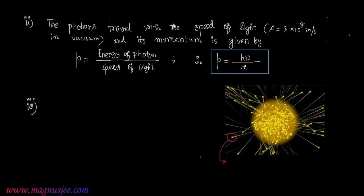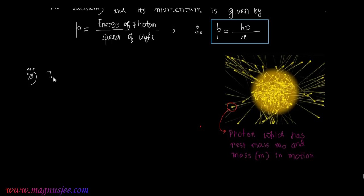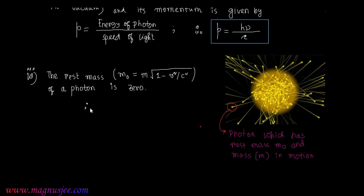Property 4: This is the photon in the diagram — these packets of energy are the photons. A photon has rest mass M₀ and mass M in motion. The rest mass is given by M₀ = M√(1 − v²/c²), where v is the speed of the photon and c is the speed of light. The rest mass of a photon is zero; therefore M₀ = 0.